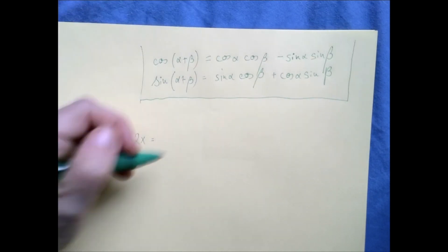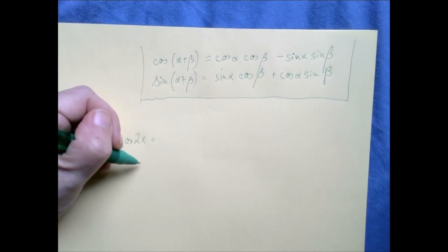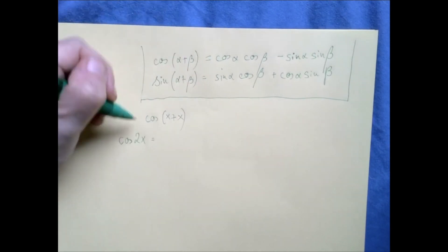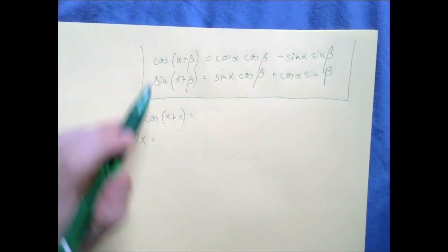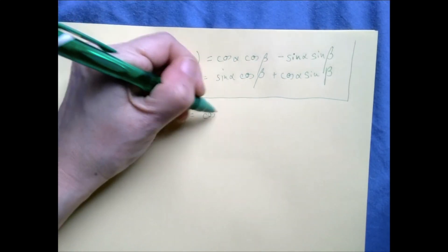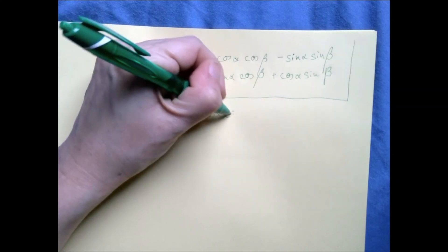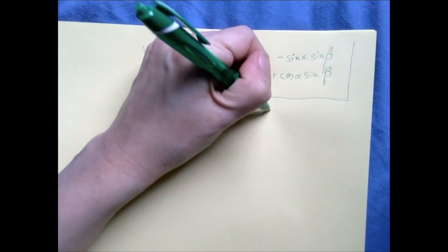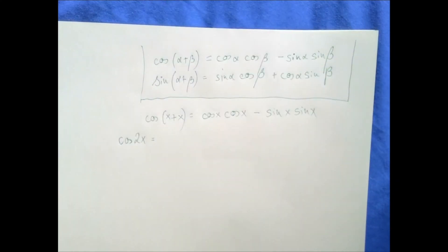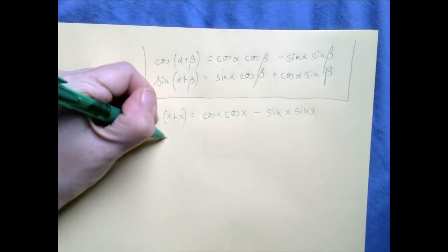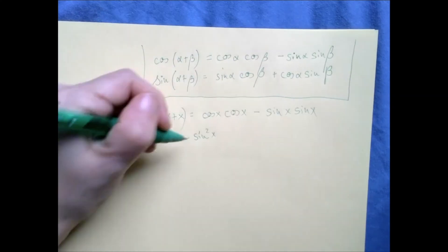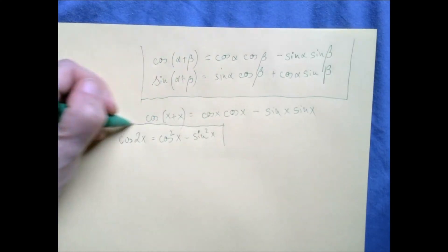If we repeat this line: cosine of alpha plus beta would be cosine of x plus x, which is cosine of 2x. Now we continue, and wherever we see alpha or beta, we write x. So it's cosine x times cosine x minus sine x times sine x. And then we just clean up — this is cosine squared x minus sine squared x. That's called the double angle formula for cosine.